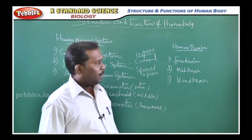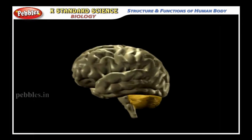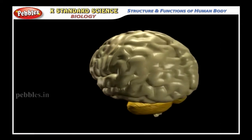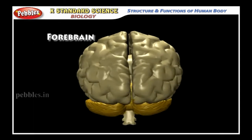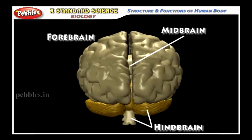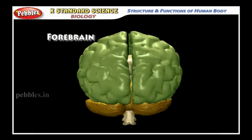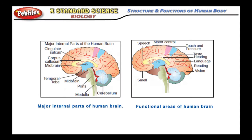Observing the slide, the human brain structure has forebrain, midbrain, and hindbrain. The forebrain consists of the cerebrum and cerebral cortex, and the cerebral cortex contains various parts including the motor area and sensory area. This is clearly shown in the diagram, and your textbook also gives the major internal parts of the human brain and the functional areas.